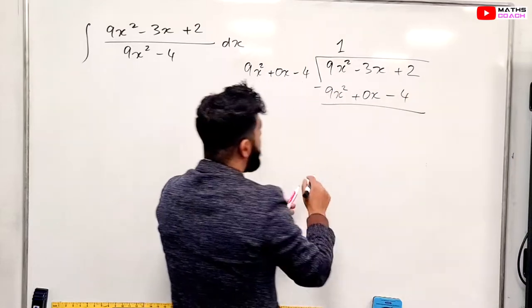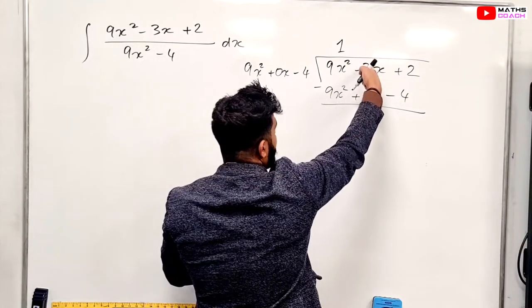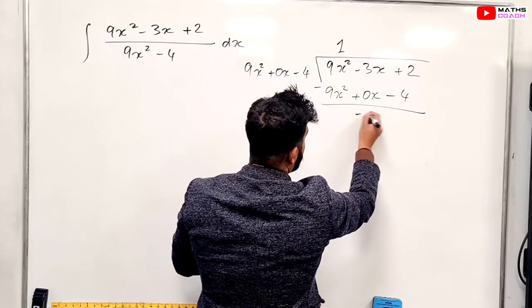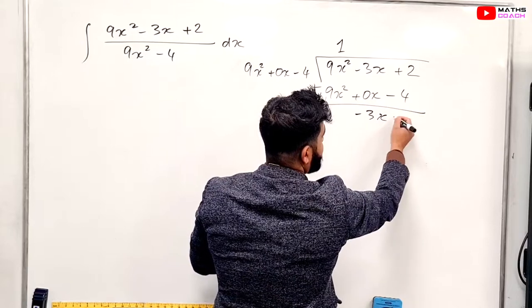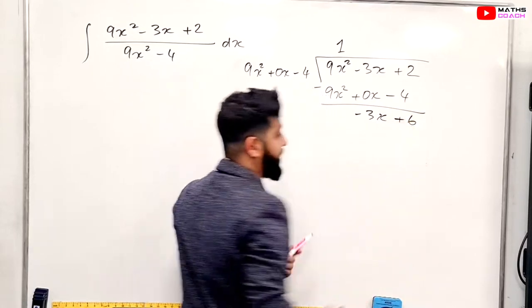Take them away. We get cancel here. We get minus 3 minus nothing, so it's just minus 3x. 2 minus minus 4 is plus 6, so therefore we end up with that.